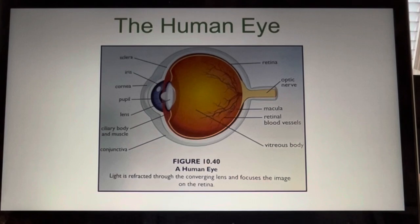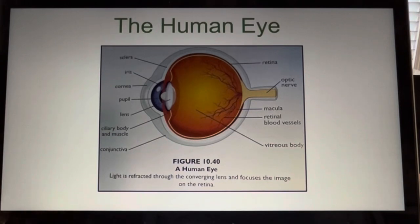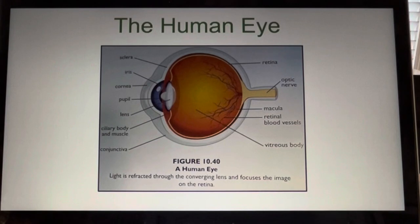The light is focused on the retina, which is made up of light-sensitive cells called rods and cones. When these cells sense light hitting them, they send electrical messages down the optic nerve to the brain, which decodes the messages and forms them into images.